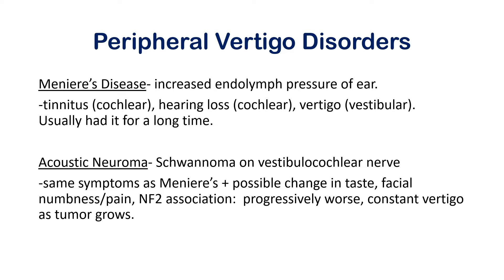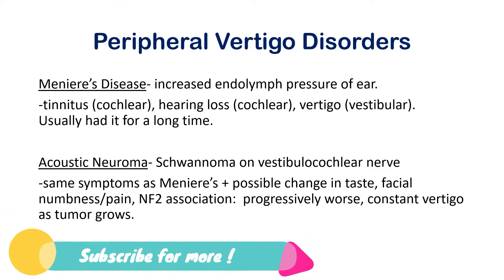The peripheral vertigo disorders are laid out with their cause and signs, which helps distinguish between types on a test. Peripheral vertigo relates to your inner ear — or a combination of middle to inner ear. Central vertigo relates to the brainstem or upper spinal cord. At the periphery of your body are the ears; at the central part is your spinal cord and brainstem. The majority of exam questions come from peripheral vertigo disorders.